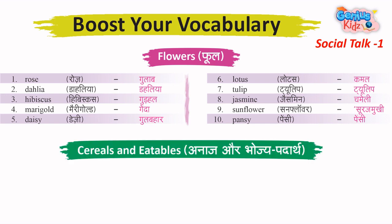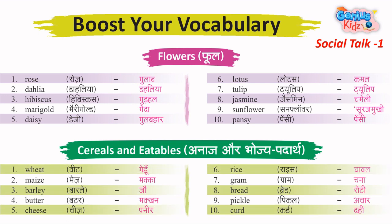Cereals and Eatables – Anaj aur Bhojya. 1. Wheat – Magi. 2. Barley – Jho. 3. Butter – Makhan. 4. Cheese – Paneer. 5. Rice – Chawal.